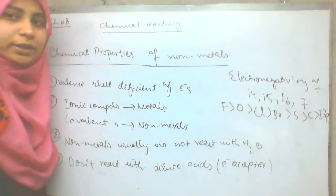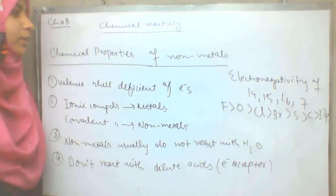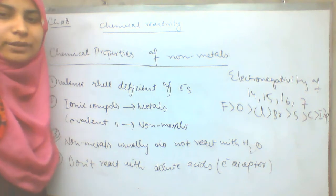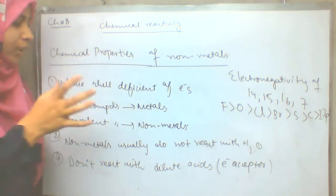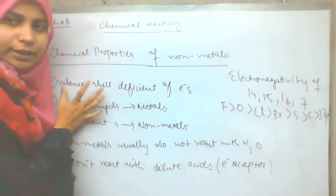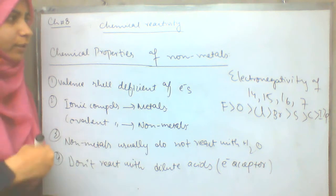Today we will talk about chemical properties of non-metals. The first property is valence shell is deficient. What is deficient?